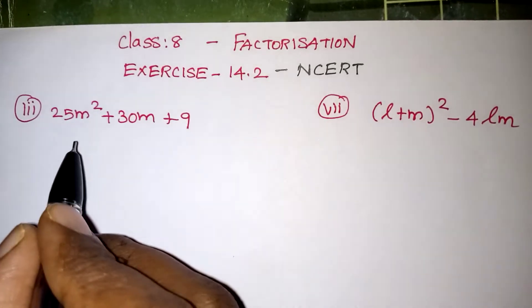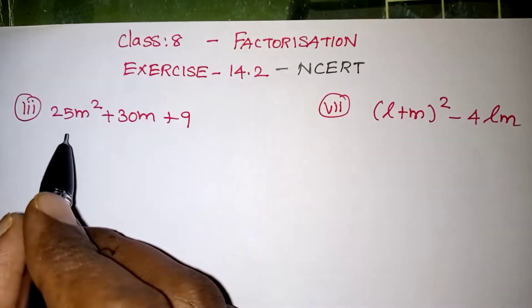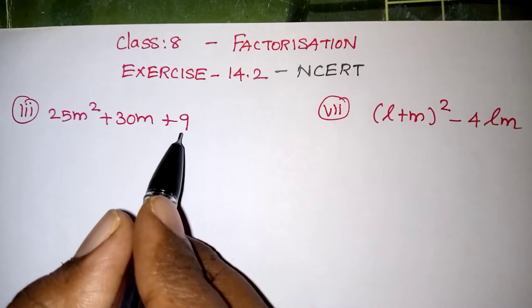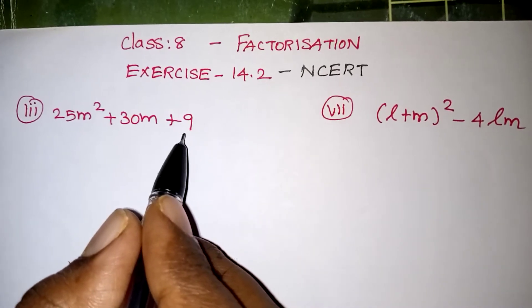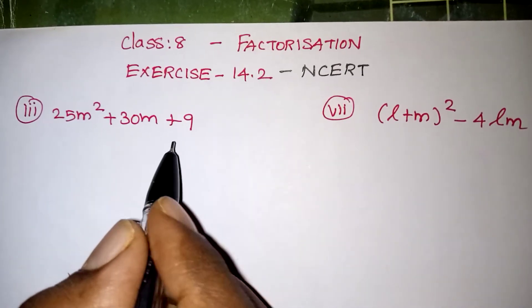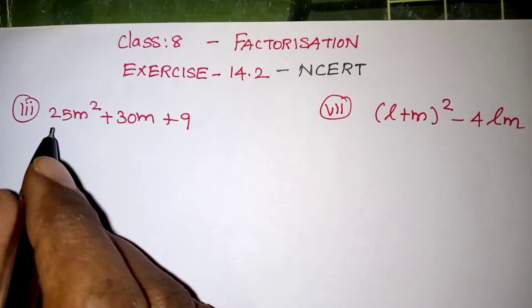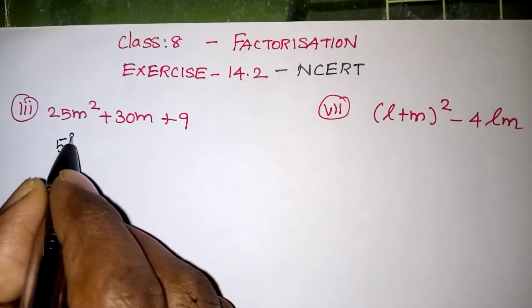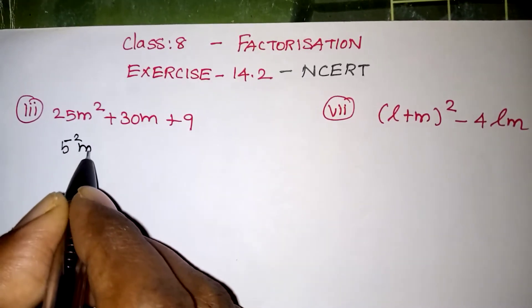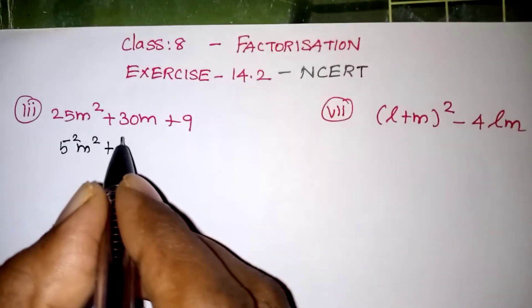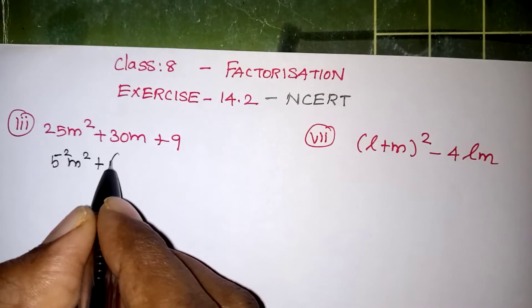Look at the question first: the first number is also a perfect square and the last number is also a perfect square. When we get numbers like this, we can write it in this way — 25 can be written as 5 squared, and this is m squared, plus 30m.